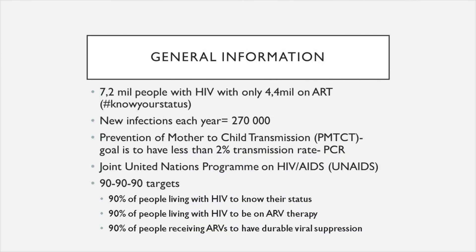Now we have HIV. There are about 7.2 million people with HIV but only 4.4 million are on antiretroviral therapy, meaning about 3 million people still don't know their status or aren't on ARVs. That's why the 'know your status' movement is so important — you can actually live a normal life if you're on ARVs. There are about 270,000 new infections each year, largely because people do not know their status and engage in unsafe sex.